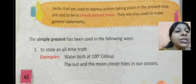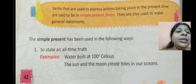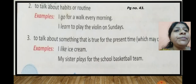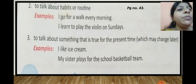Just now we had read about it. Examples: 'Water boils at 100 degrees Celsius.' 'The sun and the moon create tides in our ocean.' Now come to page number 43.